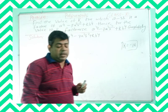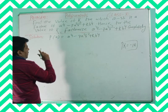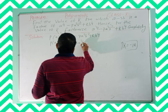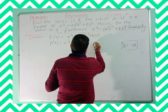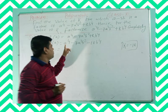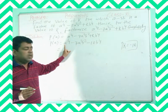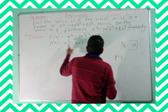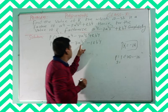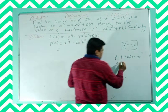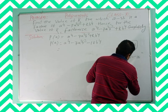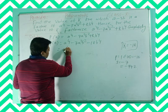Now students, you already got the value of k equal to minus 18. Put in the value of k, so the given polynomial will be p of a equal to a to the power 4 minus 7a squared b squared minus 18b to the power 4. Now you can factorize it by the middle term splitting method. The product of the coefficient of the first term and the last term is 1 times minus 18, which is minus 18. The coefficient of the middle term is minus 7.